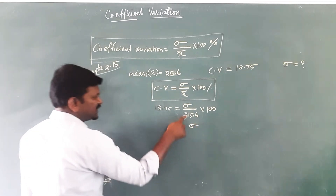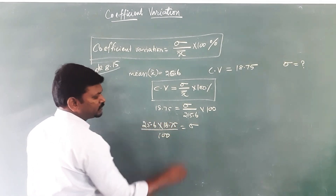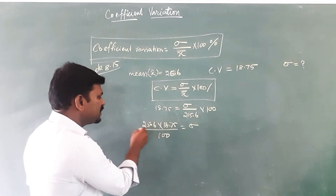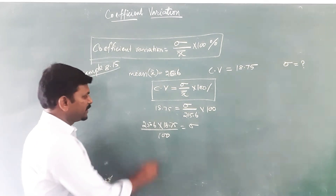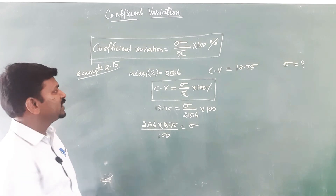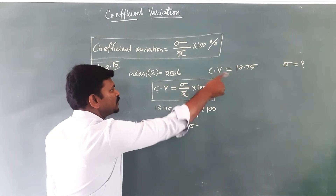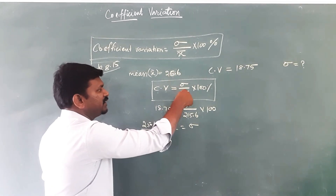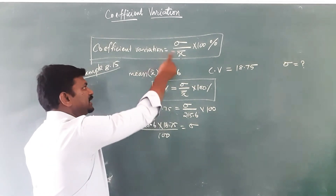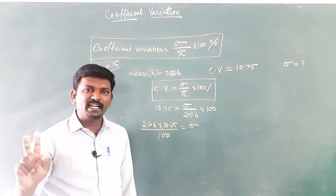To find the standard deviation, rearrange the formula: standard deviation equals CV multiplied by mean, divided by 100. Dividing by 100 means just move the decimal point two digits to the left. If it is a direct problem, they will give the standard deviation and mean — just substitute the values and multiply by 100 to get the coefficient of variation.